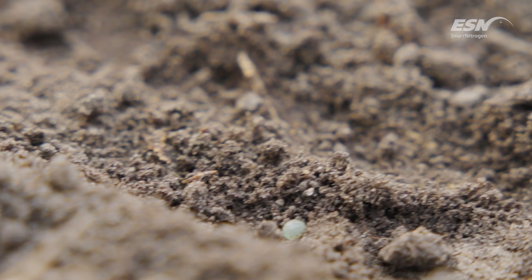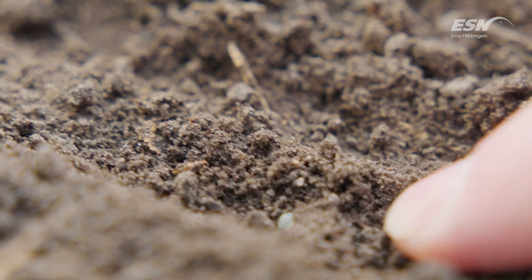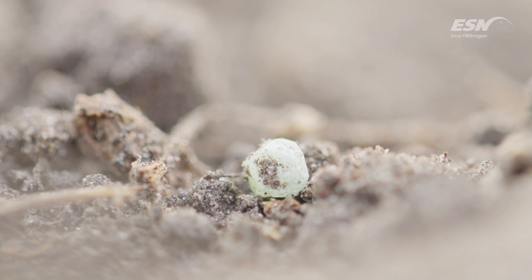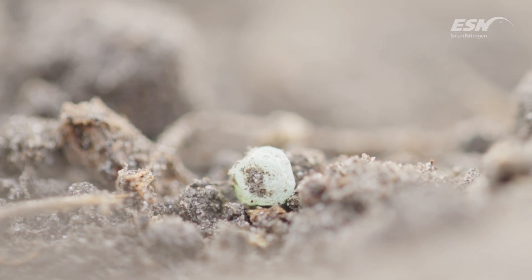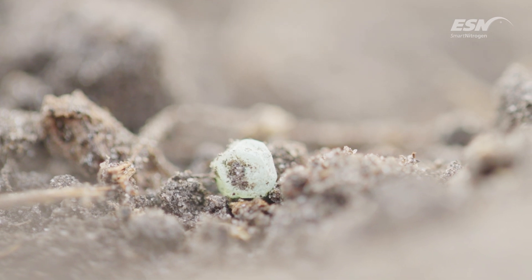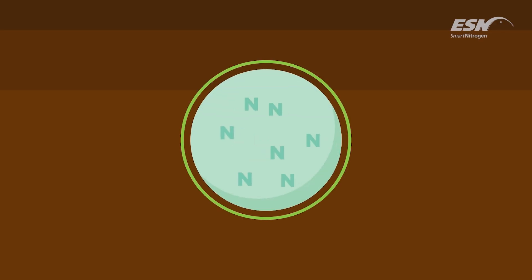ESN protects against volatilization losses by slowing the rate of urea release, so we have less urea at the soil surface at any point in time, and thereby reduces the exposure of urea to volatilization losses. ESN also reduces denitrification and leaching by releasing nitrogen over a period of time, so as the urea is converting to nitrate, we're only converting a small amount at a time.